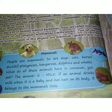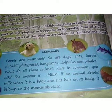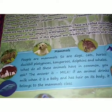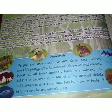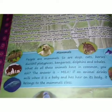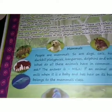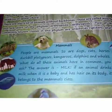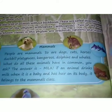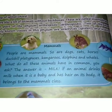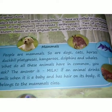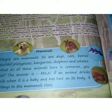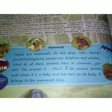An animal also has hairs on its body, so it belongs to the mammal class. If you are given a list of animals and asked to pick out a mammal, you need to know these two important properties: first, they drink milk when they are babies, and second, they have hairs on their body.